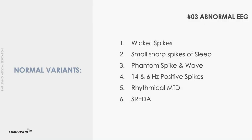Normal variants are sharply contoured waveforms on EEG which can be misinterpreted as epileptiform discharges. The commonly encountered normal variants in adult EEG include wicket spikes, small sharp spikes of sleep, 6 Hz phantom spike and wave, 14 and 6 Hz positive spikes, rhythmic mid-temporal discharges, and subclinical rhythmic EEG discharges of adults.